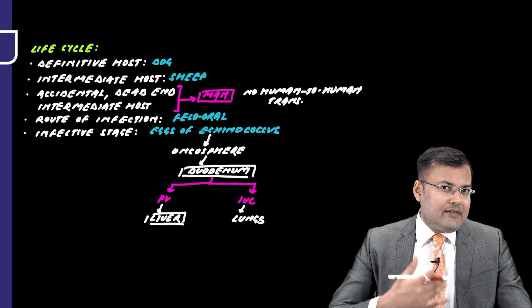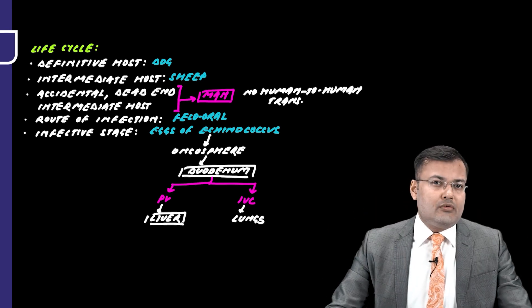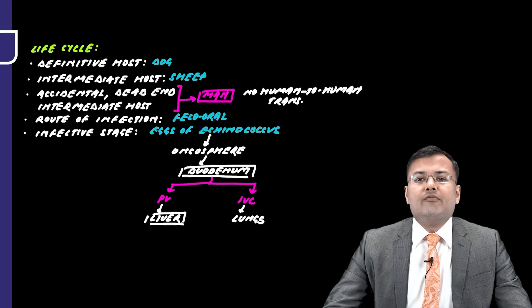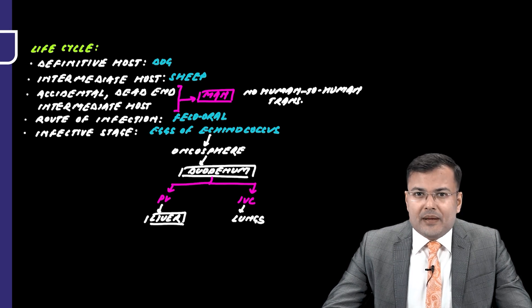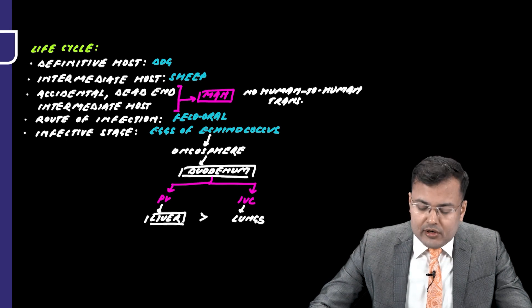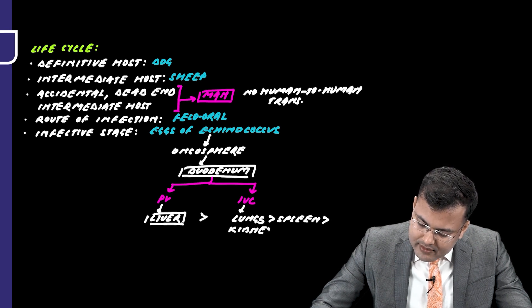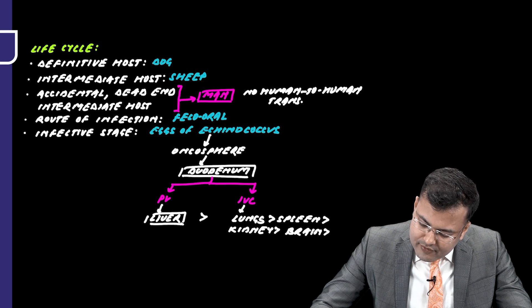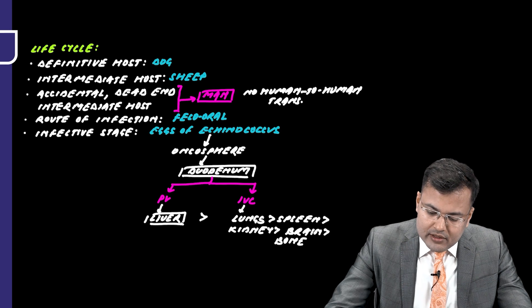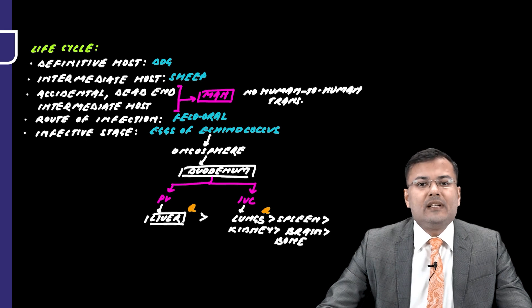From the lungs, the larva reaches the left atrium, left ventricle, and is pumped into arterial circulation. Other organs involved include the spleen, kidney, brain, and bone. In order of frequency: liver, lungs, spleen, kidney, brain, and bone.